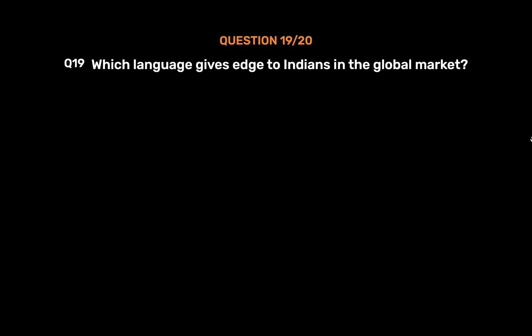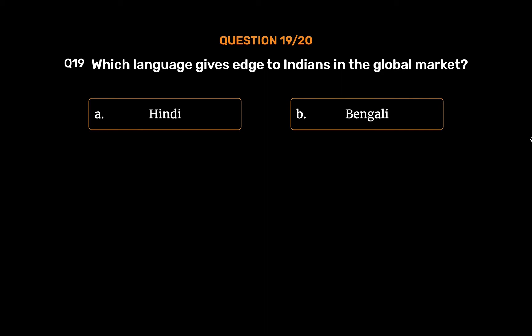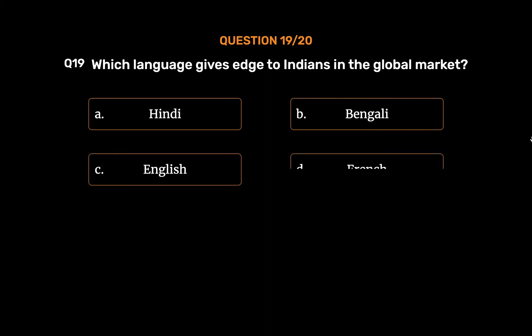Question 19: Which language gives an edge to Indians in the global market? Options: A. Hindi, B. Bengali, C. English, D. French. The correct answer is Option C: English.